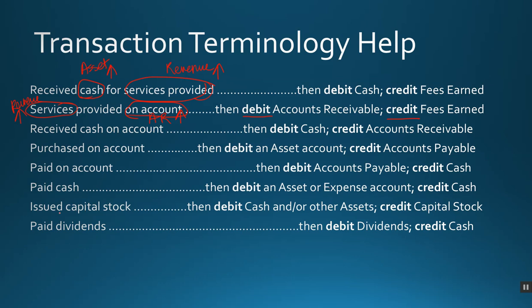'Received cash on account' means we receive cash — so cash is increasing — and accounts receivable is decreasing because we're collecting what was owed. 'Purchased on account' means we purchased something without using cash, so we are increasing our debt. The asset purchased is increasing and so is accounts payable — they both increase on two different sides. 'Paid on account' means cash is decreasing and so is our debt because we're paying it down — both are decreasing but on two different sides.